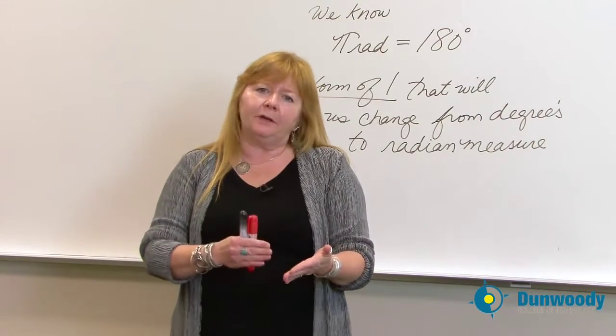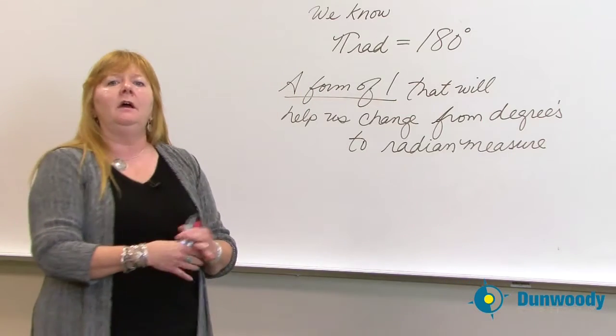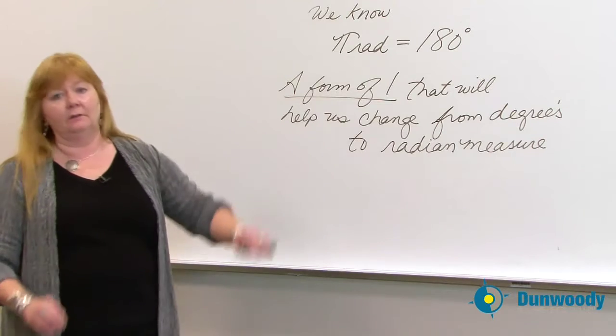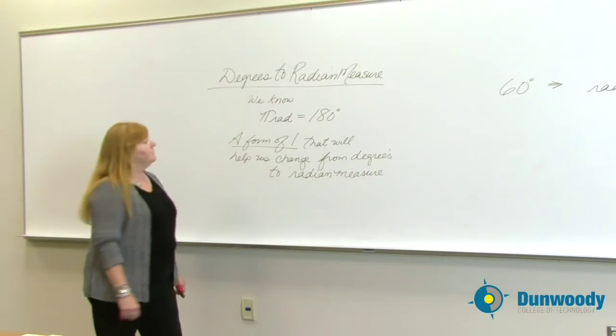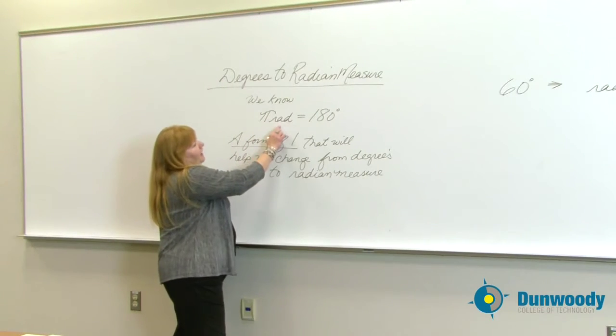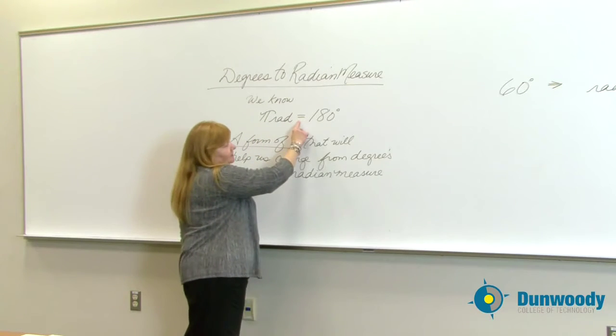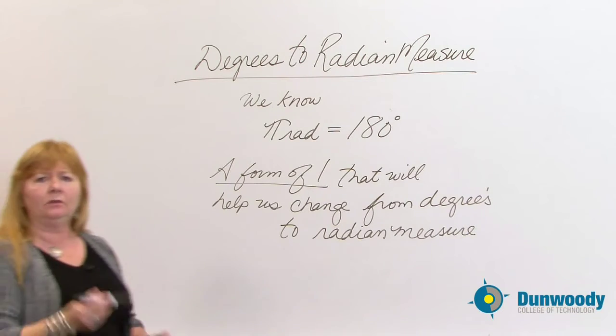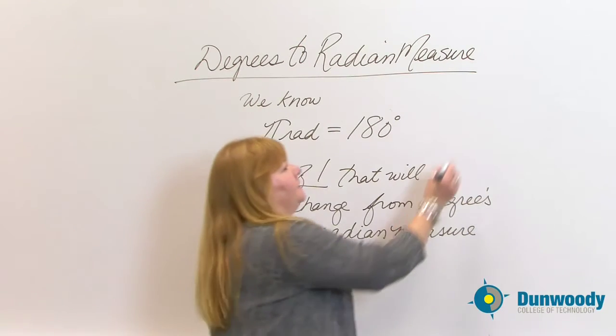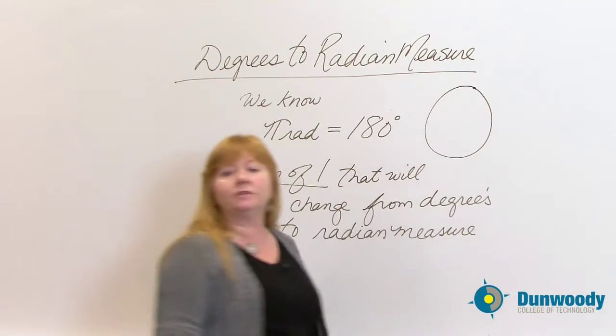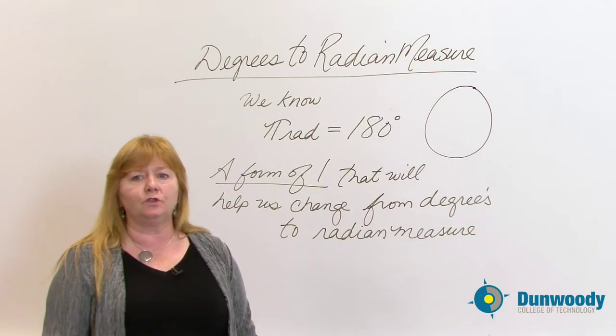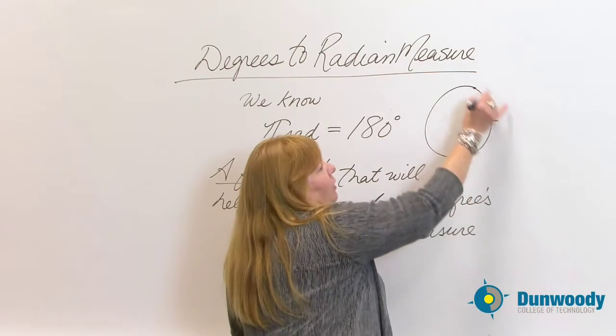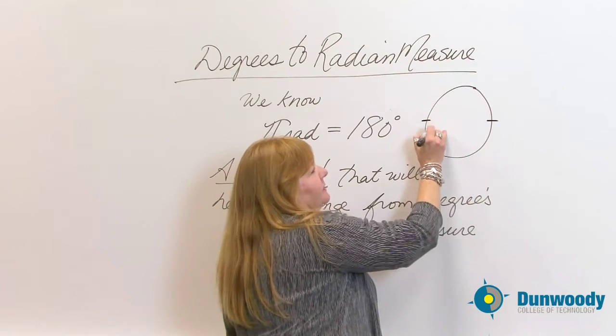This time we're going to focus on taking degrees and changing them back into radian measure. Let's review a little bit of what we just got done doing in the last segment to make sure we're all understanding what needs to be done for conversion. You found out that pi radian or pi rad means exactly the same thing as 180 degrees.